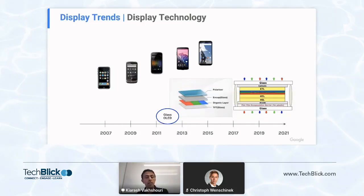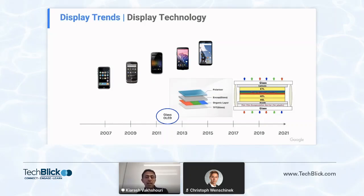Later on, with the introduction of glass OLED by Samsung, we got a little bit more room in terms of the design of the phone, so you could have a larger battery size in addition to the benefits from OLED displays. However, there is still a challenge with glass OLED because it still sits within a glass structure and encapsulation layer, so you don't have enough flexibility for different form factors.